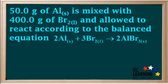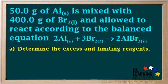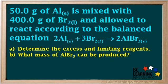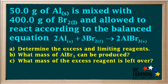Here we're given the masses of aluminum and bromine present initially: 50 grams of aluminum mixed with 400 grams of bromine, reacting according to 2Al + 3Br2 → 2AlBr3. We're asked to determine the excess and limiting reagents, the mass of aluminum bromide that can be produced, and the mass of the excess reagent left over.